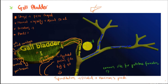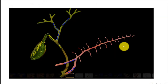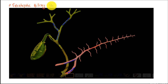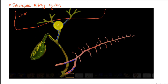The cystic duct is two to three centimeters in length and two to three millimeters in diameter, and consists of mucosal elevations known as the spiral valve of Heister. Now let's move on to the extrahepatic biliary system. Here we have the liver, and inside the liver we have intrahepatic biliary radicles.